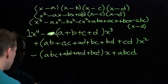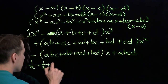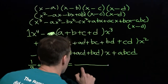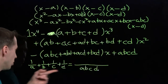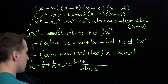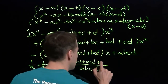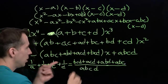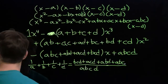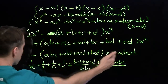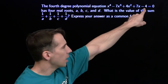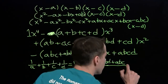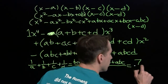We were looking for 1/a plus 1/b plus 1/c plus 1/d. Writing this with a common denominator abcd, the numerator becomes bcd plus acd plus abd plus abc — which is exactly the opposite of the coefficient of x. The denominator is just the constant term. The coefficient of x is 7, so the numerator is negative 7; the constant term is negative 4, so the denominator is 4. The answer is negative 7 over negative 4, which is 7/4.